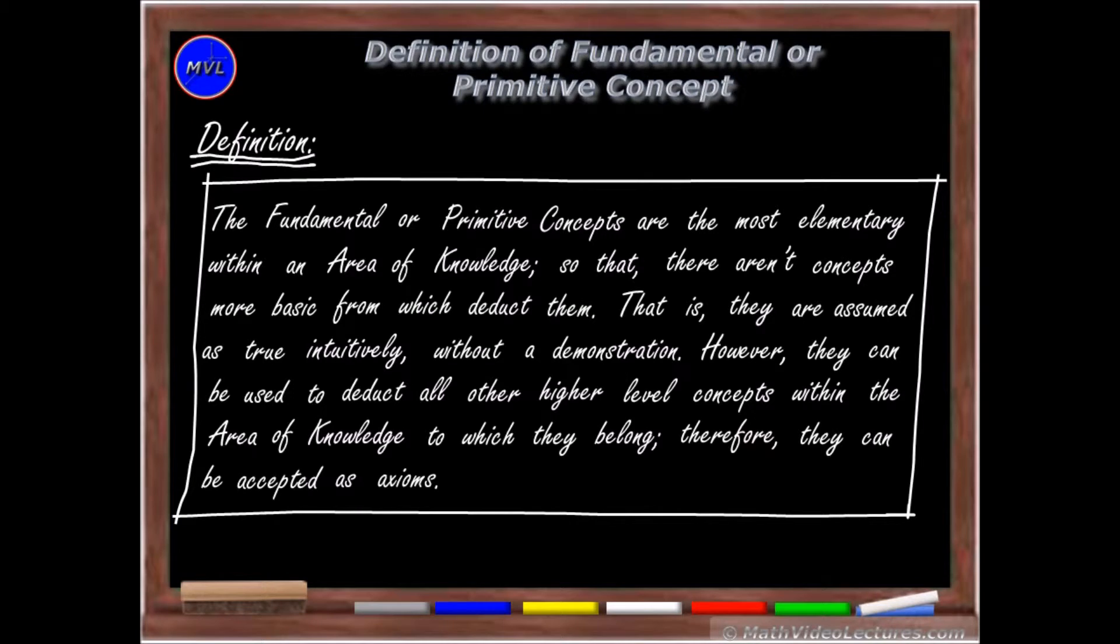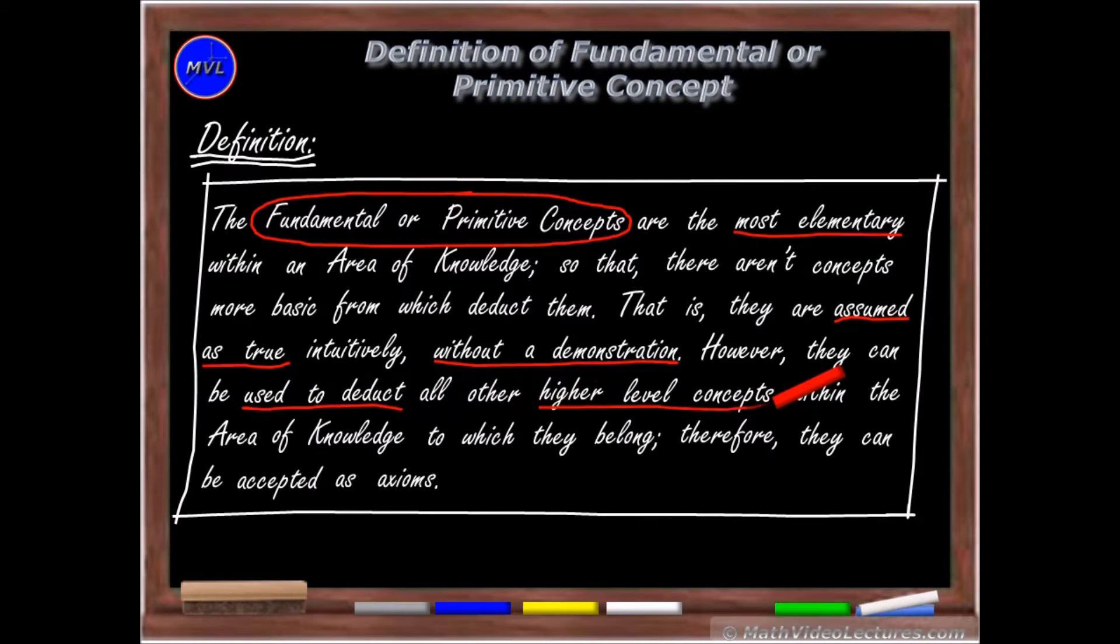Very well, let's get back to the previously given definition and remark its key points. The fundamental or primitive concepts are the most elementary, they are assumed as true without a demonstration, they are used to deduct higher-level concepts, and they can be accepted as axioms. In this definition, the term axiom needs to be clarified. Nevertheless, we will wait until the next video within this lecture to do so.